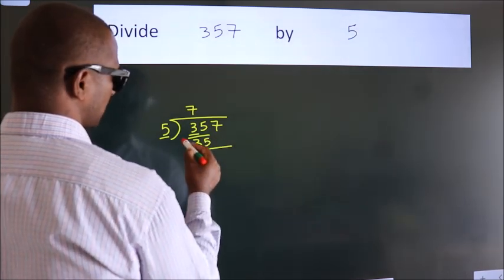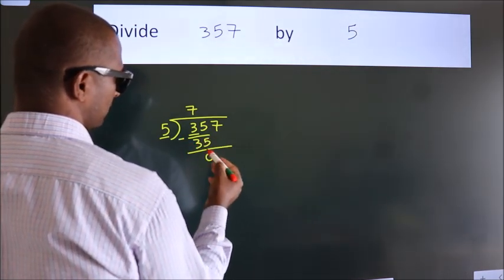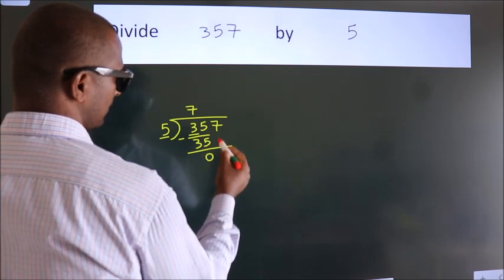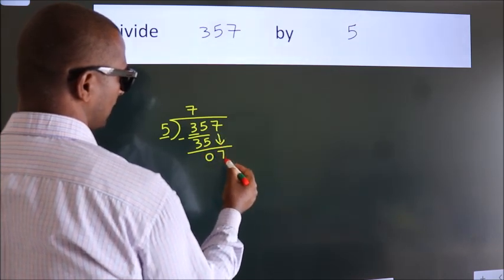Now, we should subtract. We get 0. After this, bring down the next number. So, 7 down.